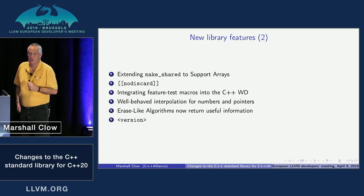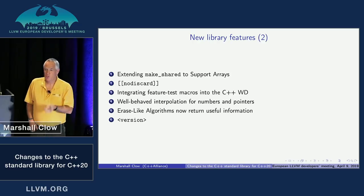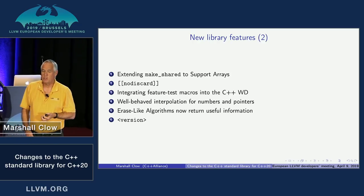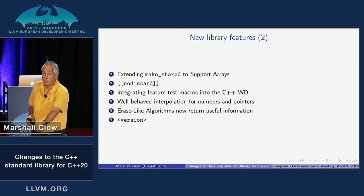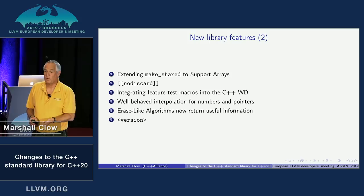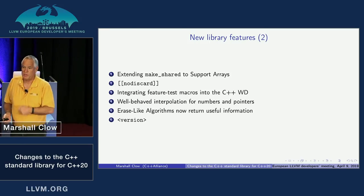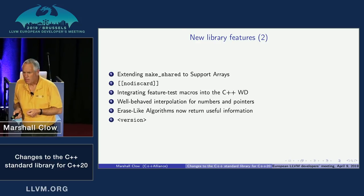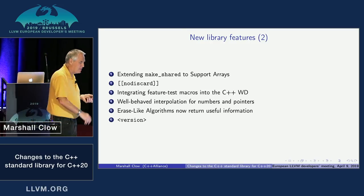Erase-like algorithms now return useful information. Previously erase algorithms returned void — they didn't return any information. In C++20, they'll return the number of things that were erased. This is really useful for erase_if: 'I want to erase all odd numbers out of this container — how many were there?' Now you can get that information.